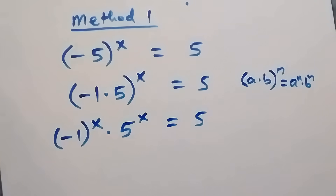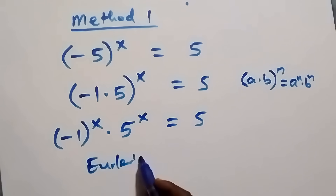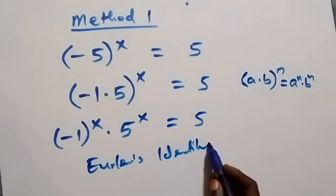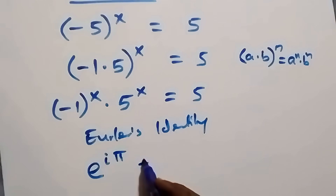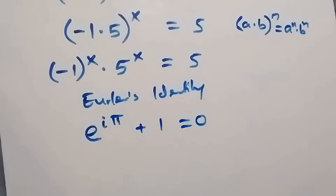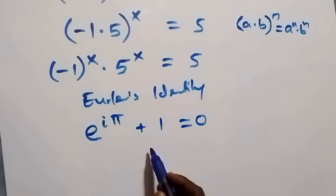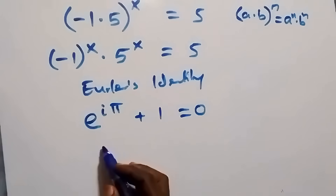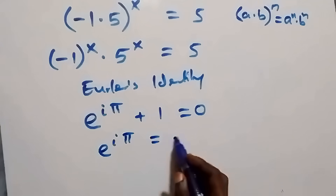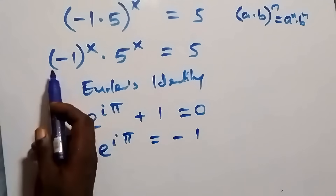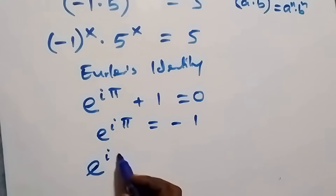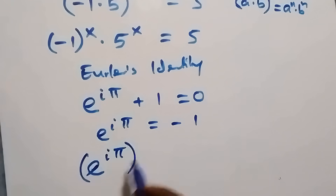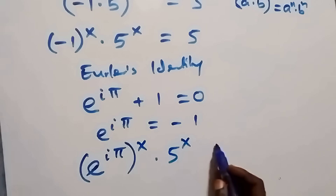Now let's recall Euler's identity: e raised to power i pi plus one equals zero. Taking the plus one to the other side, we get e raised to power i pi equals minus one. So instead of writing minus one, we write e raised to power i pi.